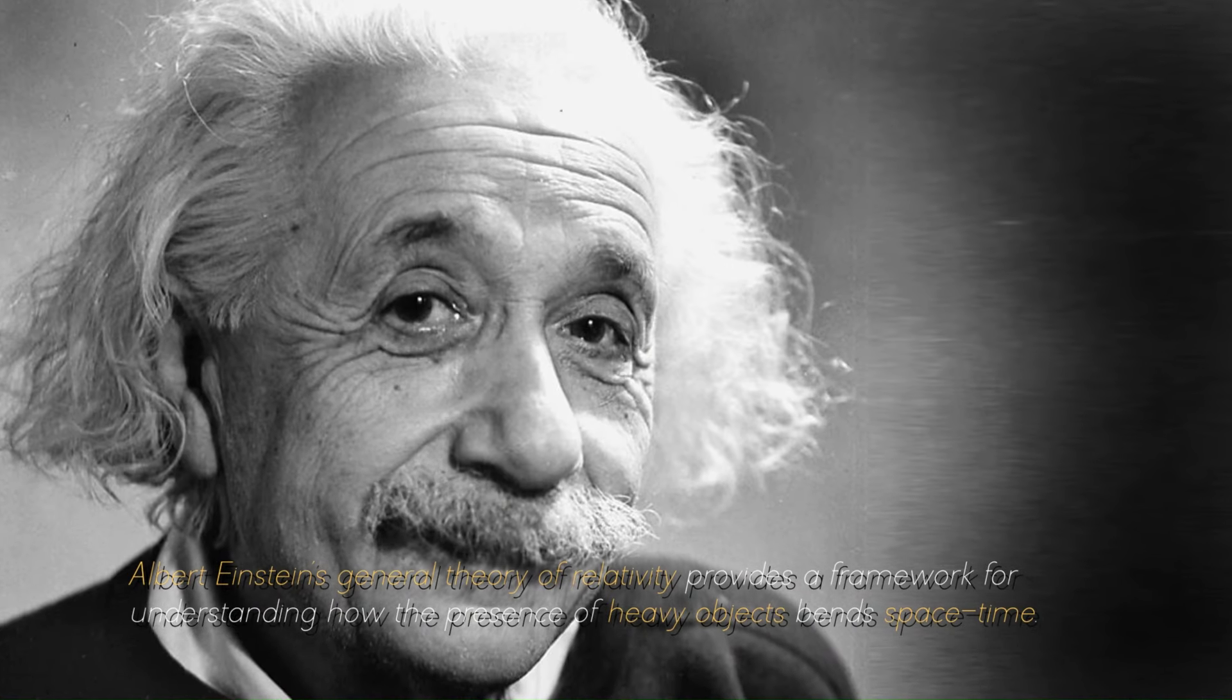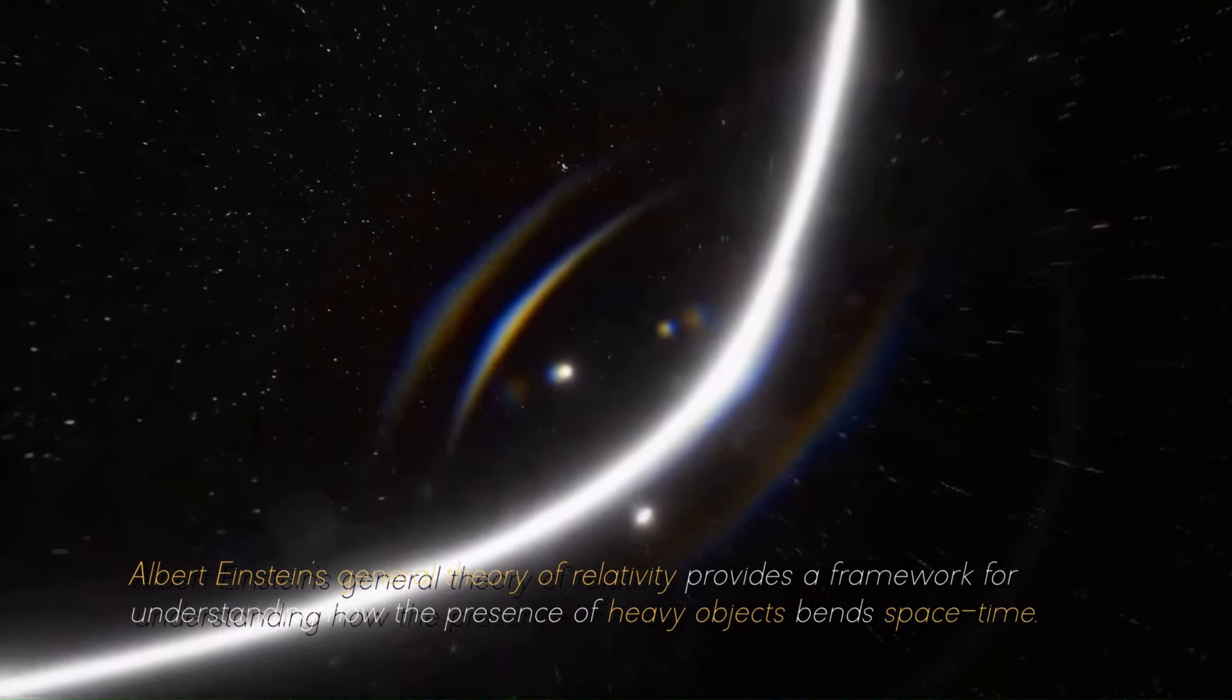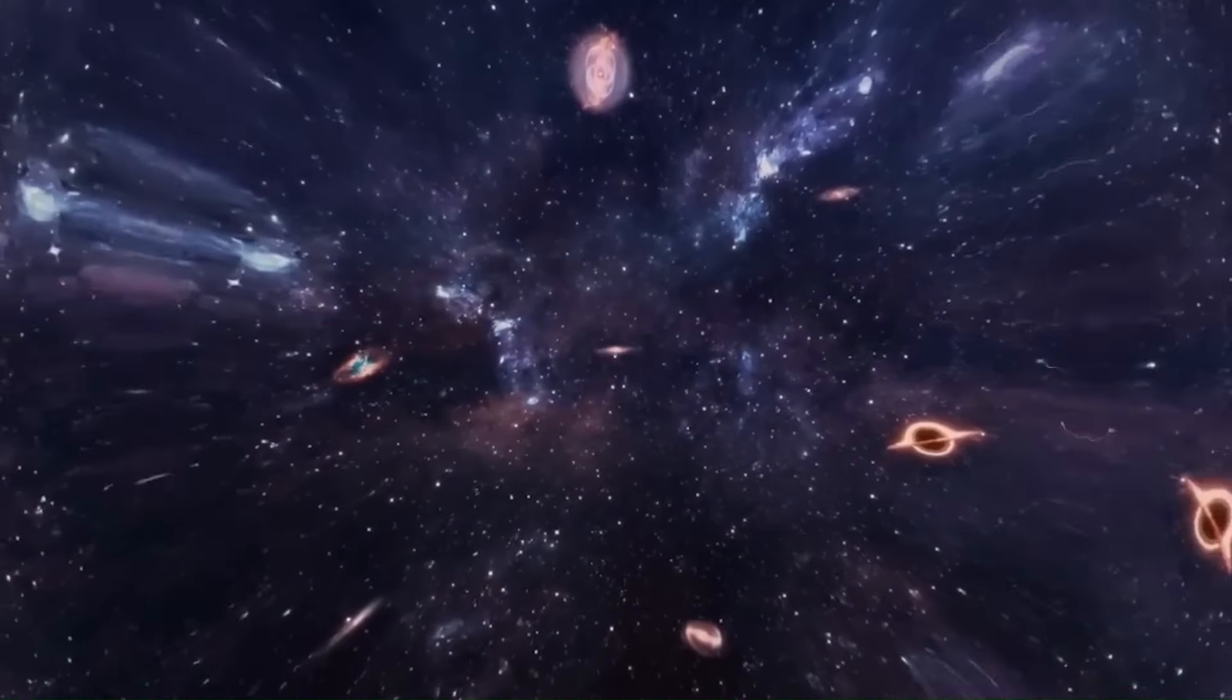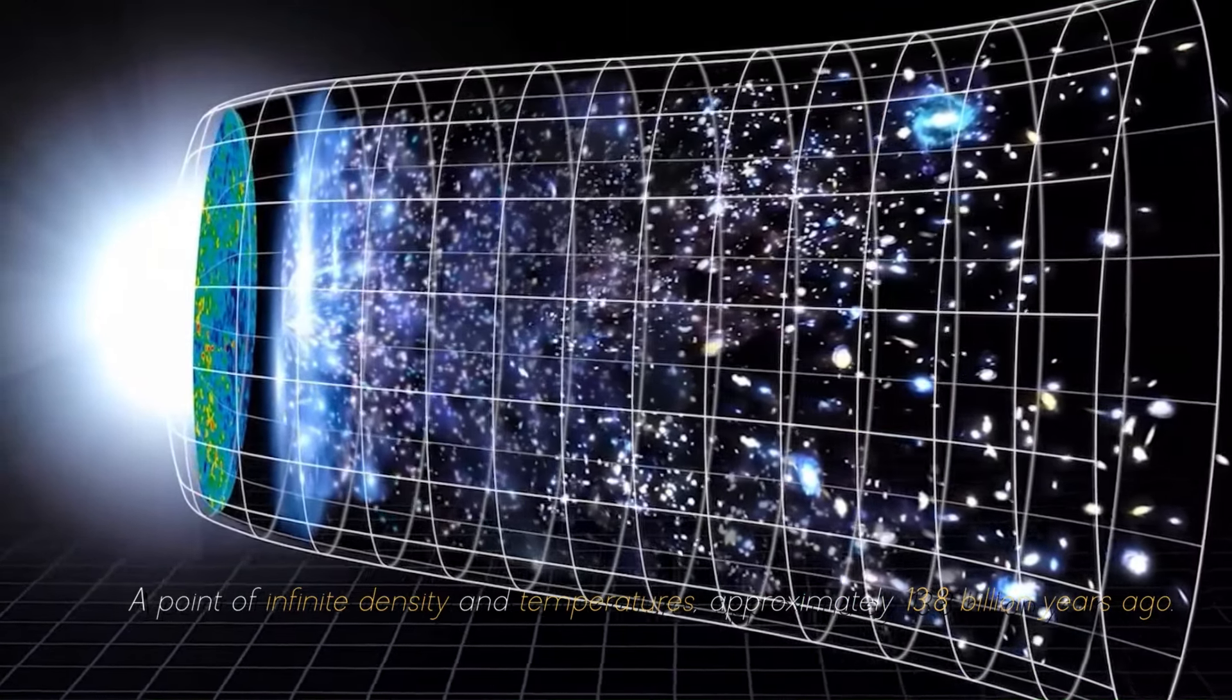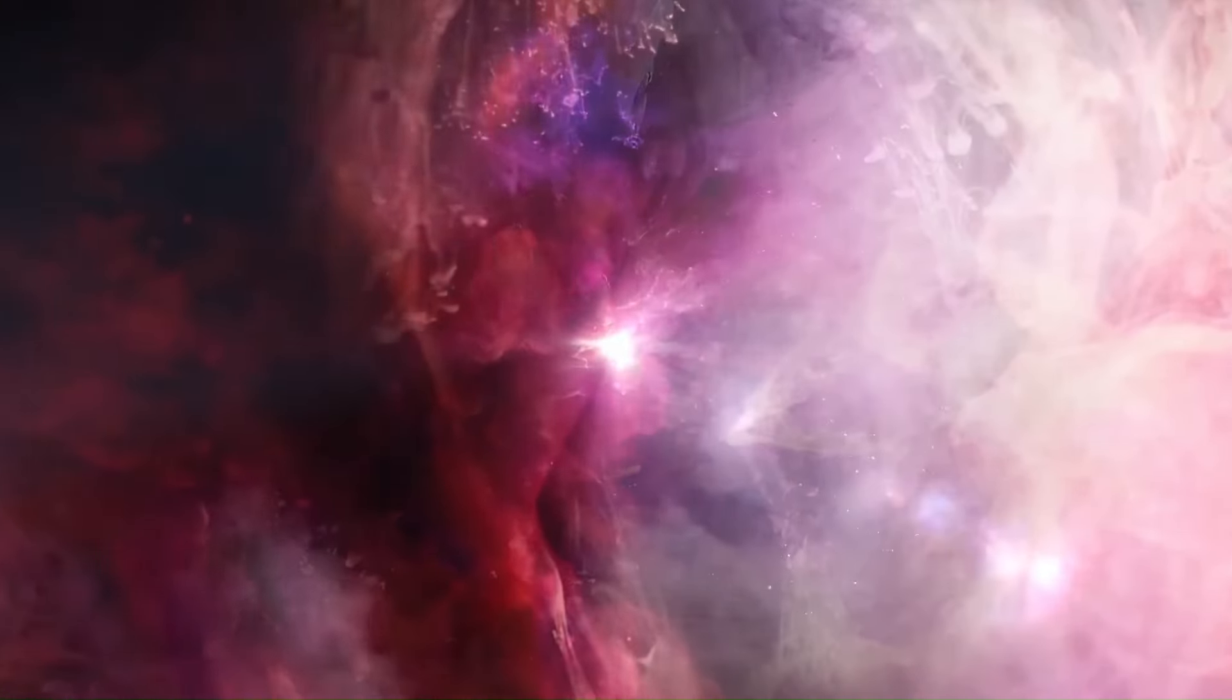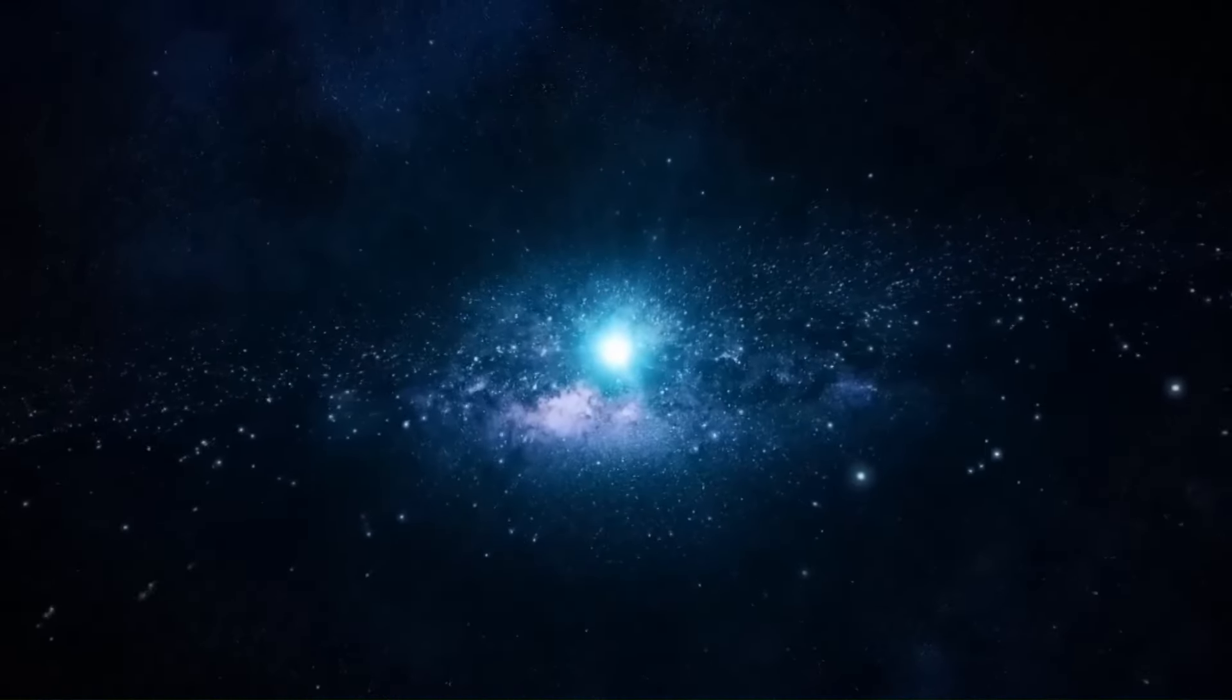Albert Einstein's general theory of relativity provides a framework for understanding how the presence of heavy objects bent space-time. According to this theory, the cosmos originated as a singularity, a point of infinite density and temperature approximately 13.8 billion years ago. All matter and energy were compressed into an extremely small, hot region. At this point, the cosmos began to expand with a rapid and violent event known as the Big Bang.